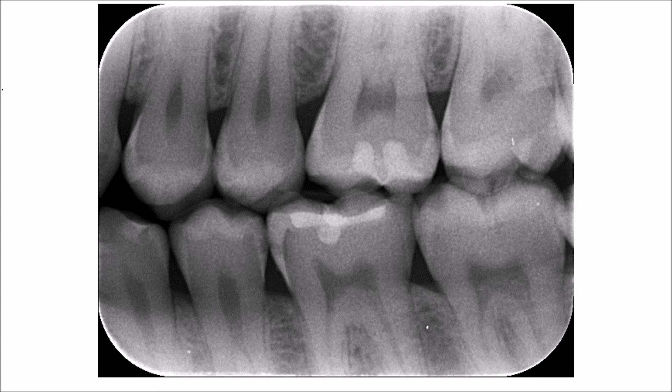On the distal surface of the second premolar, you will see a triangular radiolucency that is confined to the enamel with no apparent radiolucency at the dentine side. So the caries cavity is only noticed in the enamel at the distal surface.